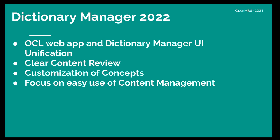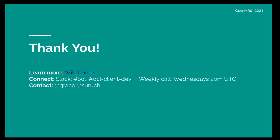Keeping in mind the pain points and priorities of our users, we have decided on priorities for 2022, which include OCL web app and Dictionary Manager UI unification, clear content review, customization of concepts, and a focus on easy use of content management. If you have any queries, please reach out to me or Grace, director of product, and connect through Slack and learn more from our wiki and user guide.